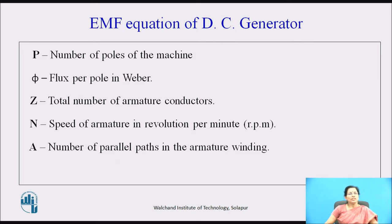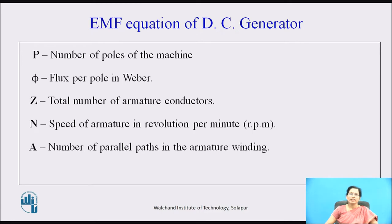P is the number of poles of the machine, phi is the flux per pole in Weber, Z is the total number of armature conductors, N is the speed of armature in revolutions per minute, and A is the number of parallel paths in the armature winding.